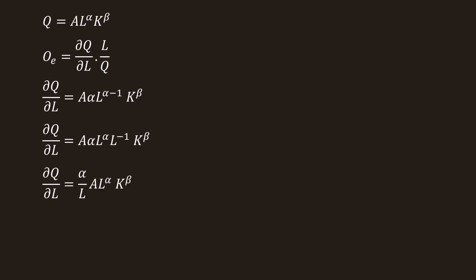Rewriting: dQ/dL equal to (alpha / L) times A L^alpha K^beta. Since A L^alpha K^beta is equal to Q, we shall rewrite it as dQ/dL equal to alpha Q divided by L.